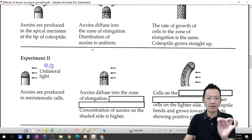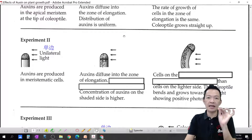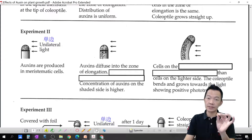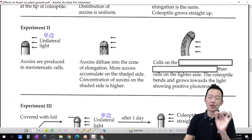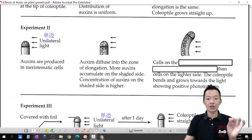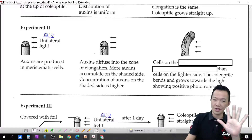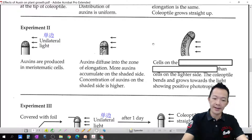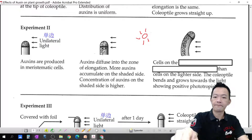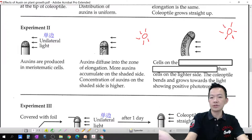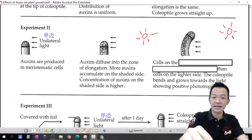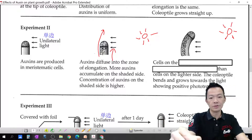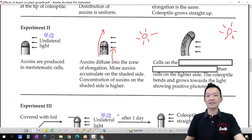Auxin likes to hide in the shaded area. So the right side has strong light, the left side has less light. More auxin accumulates on the shaded side — the left side. The sunlight comes from the right-hand side, auxin moves away from light to the left-hand side, so the left side grows faster and the right side grows slower. Finally, the shoot bends toward the sunlight.